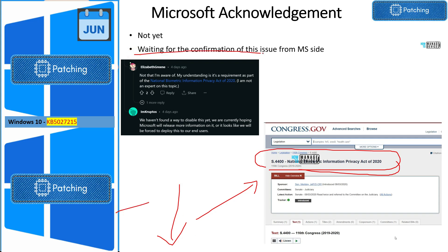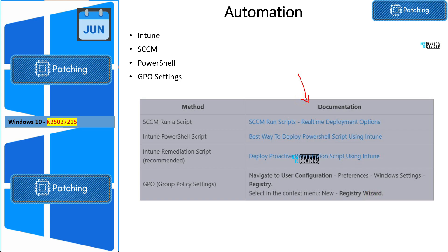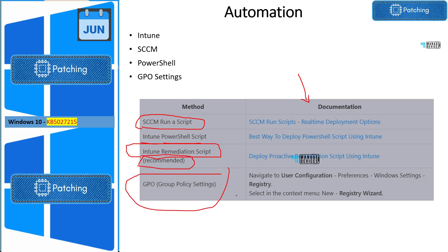We are still waiting for confirmation from Microsoft on this issue. If you want a quick fix on devices where you have already deployed the June patch, you can look into the options in the table. You can use a PowerShell script deployed via SCCM, or you can use Intune to deploy the PowerShell script, or use the Intune remediation script option — which is the recommended approach. You can also use the older method with GPO settings using the registry wizard in GPO.